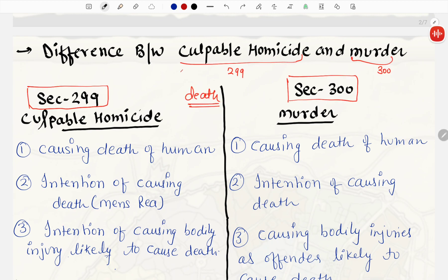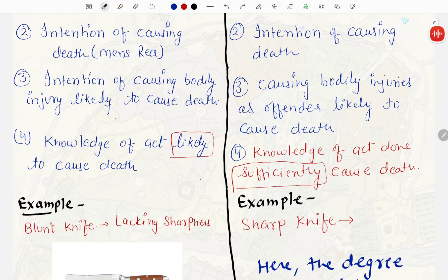In this case, we decide whether it comes under Culpable Homicide or Murder. Second thing which is common, that is the intention of causing death. Mens Rea is in this case, Culpable Homicide and Murder. Knowledge is also common in both, ki haa, is act se death ho sakti hai ya nahi hogi.